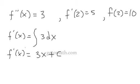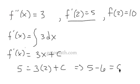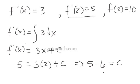Now we're going to take our conditions, plugging 2 in for x and setting everything equal to 5. So we have 3 times 2 plus c equals 5. Bringing 3 times 2, which is 6, to the left-hand side, we get 5 minus 6 equals c. Therefore c is equal to negative 1.